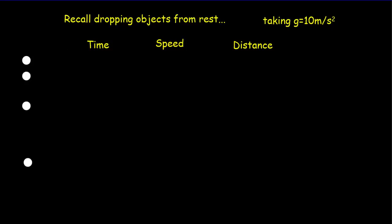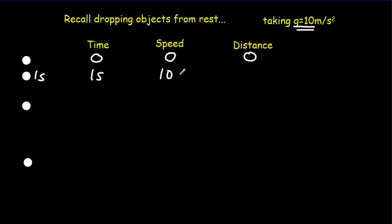Now before we get into this, I'd like you to recall what happened when we just dropped objects from rest. So if we launch our object at t equals 0 seconds with an initial speed of 0, after one second the speed will be 10 meters per second. The distance it drops — it started at zero speed, ended at 10 meters per second, gaining speed at a constant rate, so the average speed is 5 meters per second. Going 5 meters per second for one second gives a distance of 5 meters.